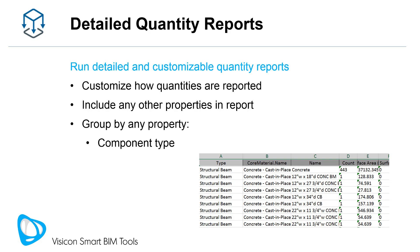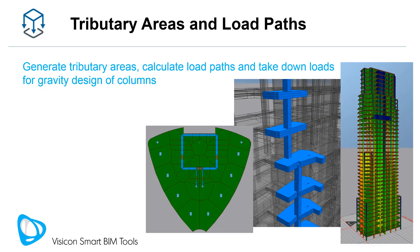Group and summarize quantities in a way that matters to your clients — group by component type, material, level, or any component size property or other model parameter. Even though we're talking about ADAPT and ETABs structural analysis models that are already running finite element-based analysis, many companies like to back-check their elastic analysis using a traditional tributary load takedown approach. Visicon incorporates a patented approach that lets you generate tributary areas, calculates load paths, and takes down loads. You can use these results to either validate your FEM analysis or use it for the gravity design of your columns.